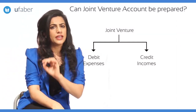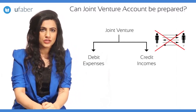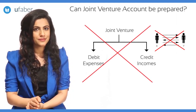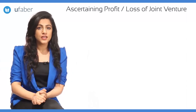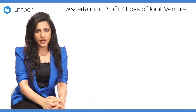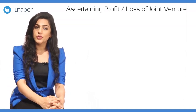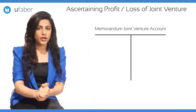Now, in the present situation, each co-venturer does not have access to the other co-venturers' transactions. Hence, the co-venturer cannot prepare the joint venture account. So how will we find out whether the joint venture has made a profit or incurred losses? We cannot ascertain profit or loss on the joint venture without preparing a statement or account. Hence, for determination of profit or loss, we have to create a memorandum joint venture account.